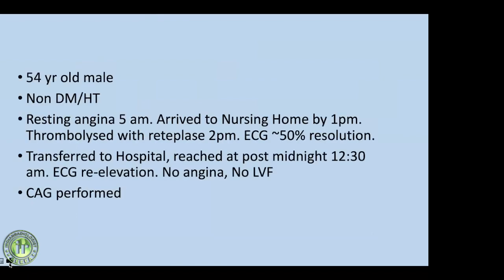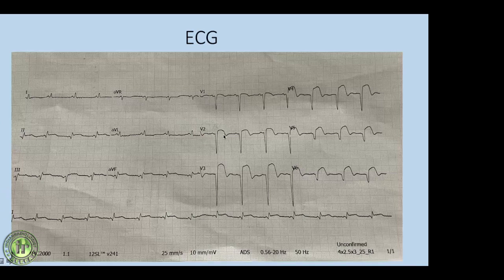This was a 54-year-old male, non-diabetic, non-hypertensive, who had resting angina at 5 AM. By the time he reached the nursing home it was 1 PM and pharmacological thrombolysis was done. He clinically improved and the ECG showed less than 50% resolution. He was shifted to a tertiary hospital, arriving around 12:30, where ECG showed re-elevation. Despite no angina, elevated troponin levels and ECG re-elevation prompted catheter angiography.